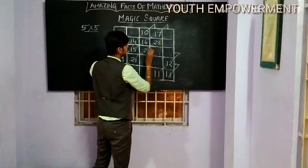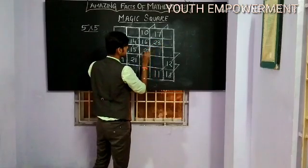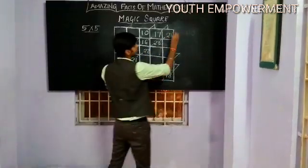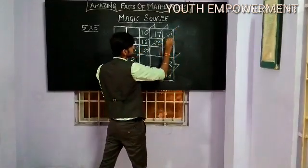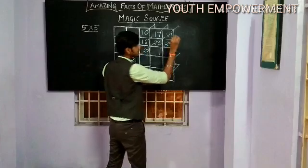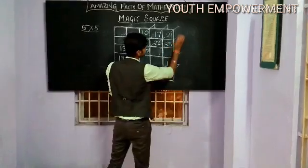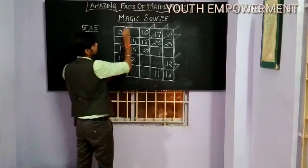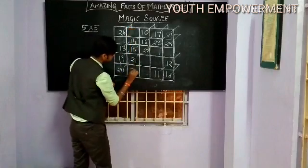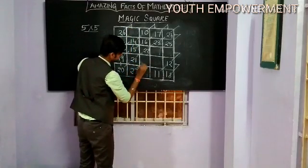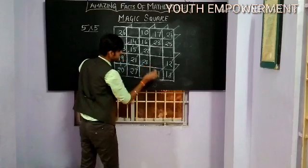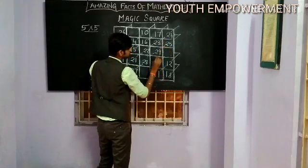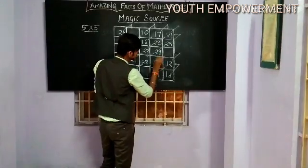Rightward diagonal: 23. Rightward diagonal: 24. Rightward diagonal — there is no box, so you need to enter here: 25. Rightward diagonal — move to the left at the end: 26. Rightward diagonal to the bottom: 27. Rightward diagonal: 28. Rightward diagonal: 29. Rightward diagonal — there is a box filled, so you need to enter the next digit here: 30.